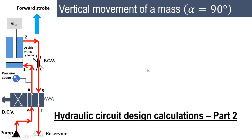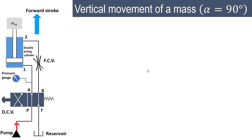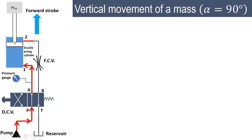Let us start with the simulation of this particular circuit. We are simulating the lifting of the mass. The flow coming in this direction will be admitted on this side and will cause the movement of the cylinder in the upward direction. The flow through this restricted opening will go to the reservoir. This is the forward stroke.